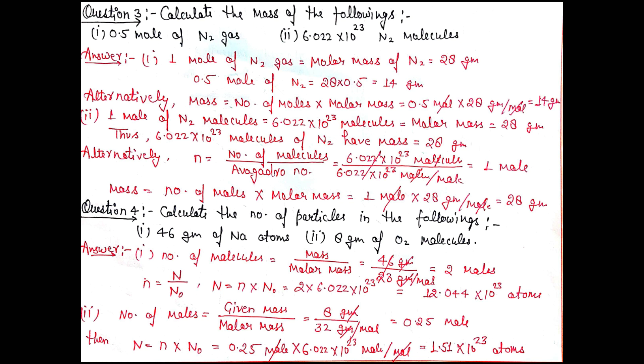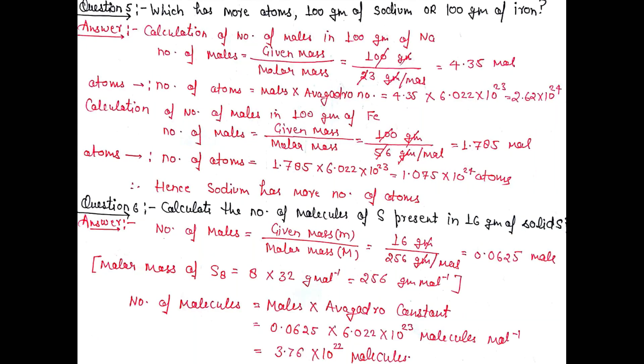Part 2: 8 grams of oxygen molecule. Similarly, using the given formula, we calculate the number of moles first, and then the number of molecules. The answer is 1.5 × 10^23 molecules.